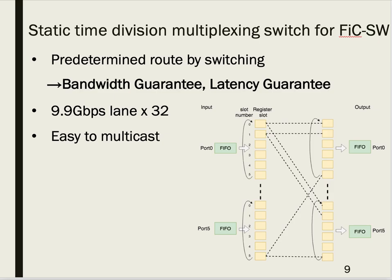FIC-SW realizes circuit switching by static time division multiplexing. In advance, we determine routes before execution. This characteristic guarantees bandwidth and communication delay. The route change is realized by changing the number of slots in the switch. This switch makes it easy to broadcast and multicast data.